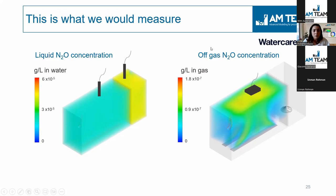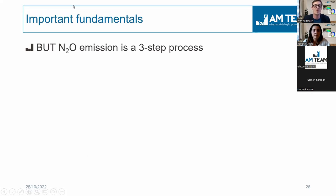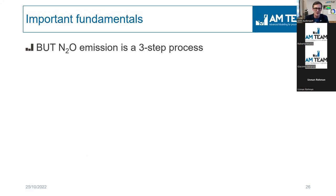In the gas phase, we can also see that the higher gas concentrations are in the top part of the reactor and in the central zone where the plumes exit the system. This is exactly what we would measure in a measurement campaign by placing some sensors.